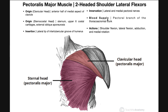The blood supply is mainly through the pectoral branch of the thoracoacromial trunk, and the innervation is via the lateral and medial pectoral nerves. The lateral pectoral nerve actually innervates more the medial part of the muscle, and the medial pectoral nerve innervates mostly the lateral part of the muscle. They are named for which cord of the brachial plexus they come off of: the lateral pectoral nerve from the lateral cord, and the medial pectoral nerve from the medial cord of the brachial plexus.